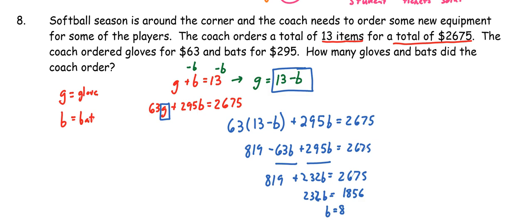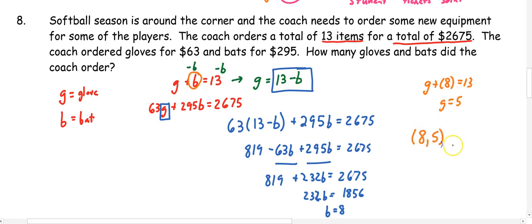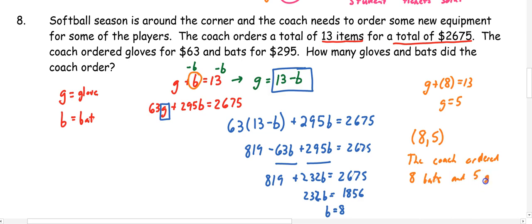I substitute 8 back in for B: G plus 8 equals 13, so G equals 5. Remember when writing the ordered pair, we go in alphabetical order, so we have 8, 5. We also have to state what this means in a sentence: the coach ordered 8 bats and 5 gloves.